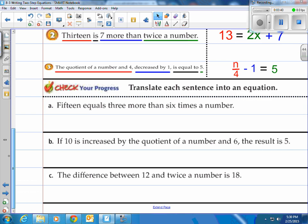How about you give it a shot? Try these three. Stop the video, come on back, and check how you did. Translate each sentence into an equation. Here's a: fifteen equals three more than six times a number. Three more than means addition, and six times the number is 6x. So we have 15 equals 6x plus 3.